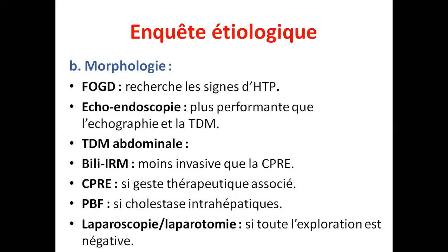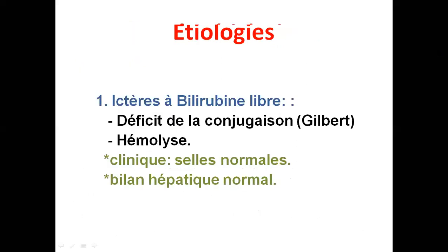On va maintenant voir les étiologies. C'est en fonction de la bilirubine : ictère à bilirubine libre (non conjuguée) et ictère à bilirubine conjuguée. Pour l'ictère à bilirubine non conjuguée : cliniquement, les selles sont normalement colorées, les urines également normalement colorées. Le bilan hépatique est normal car c'est un problème purement hématologique — le foie est sain.